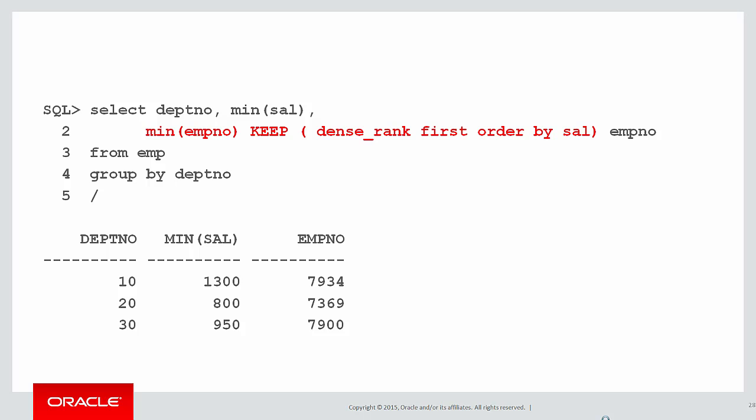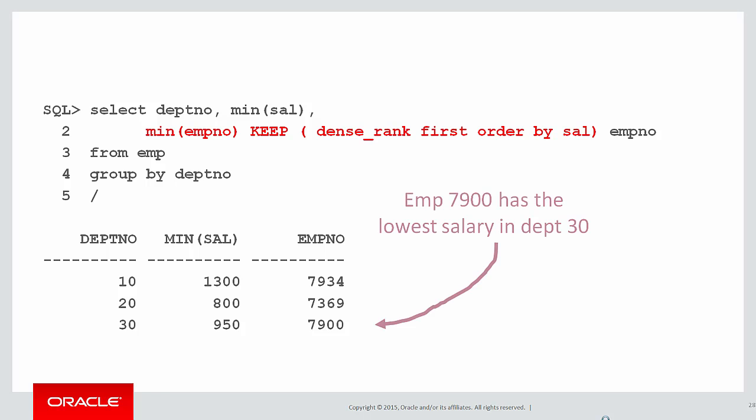It may look a little unusual, but what we're doing effectively is redefining what we mean by MIN. The terms after KEEP say: this is how we define a minimum employee number, and in this case it's based on salary. As a result, our query shows for each minimum salary displayed, we have the employee number as well. For example, employee 7900 is the person that has the lowest salary in department 30.